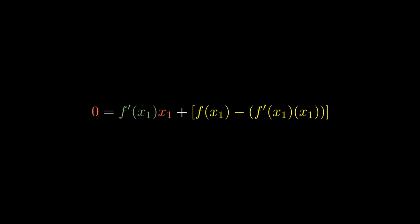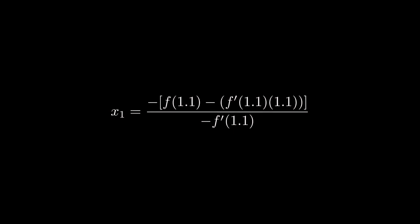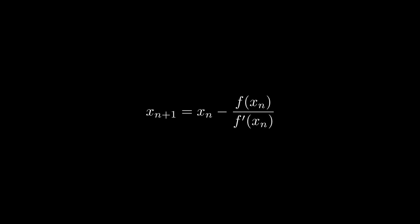But instead of going through all the steps again, we can just take a look at the last step, where we actually calculated x1. That's the final step that really counts, because we can abstract that formula to basically say, given nxn instead of 1.1, this formula will return the following term xn plus 1 instead of x1.